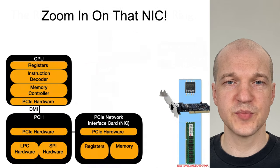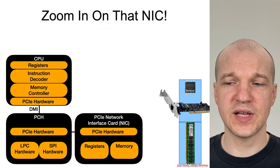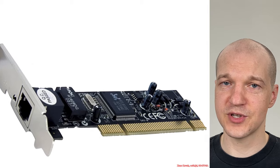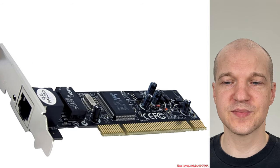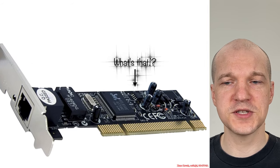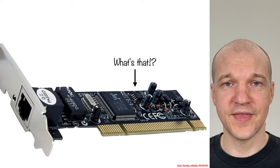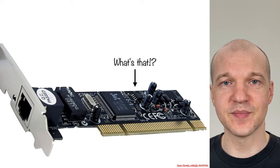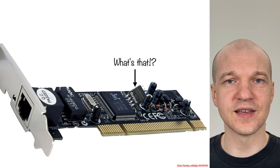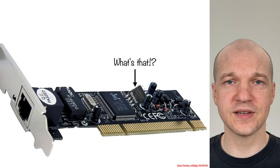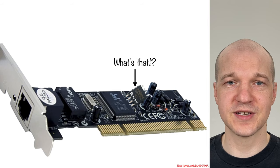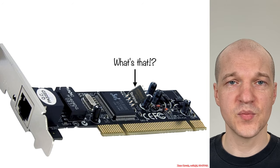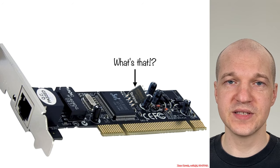Returning to this picture from before — if we zoom in on the particular NIC card used as the diagram, we have to ask: what's that? That looks like a non-volatile storage chip, a SPI flash chip, like the kind we've been seeing throughout. We previously used this SPI flash chip to refer to the main board BIOS, but such a chip could also exist on your PCI peripheral.